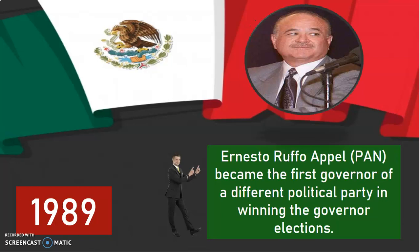In the year 1989, Ernesto Ruffo Appel, who was a member of PAN, became the first governor of a different political party by winning the governor elections. That was the first time that PRI lost an election.